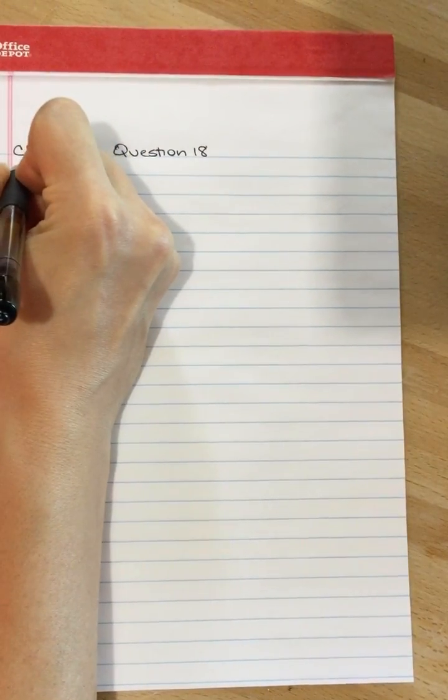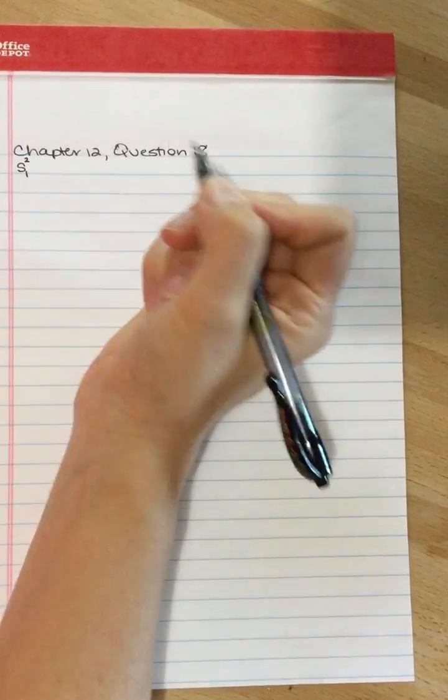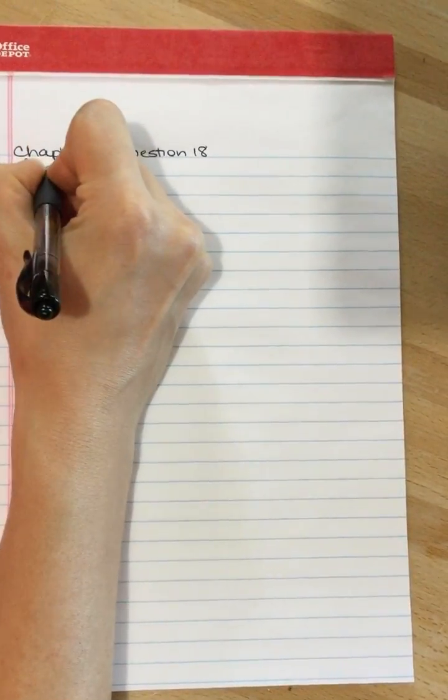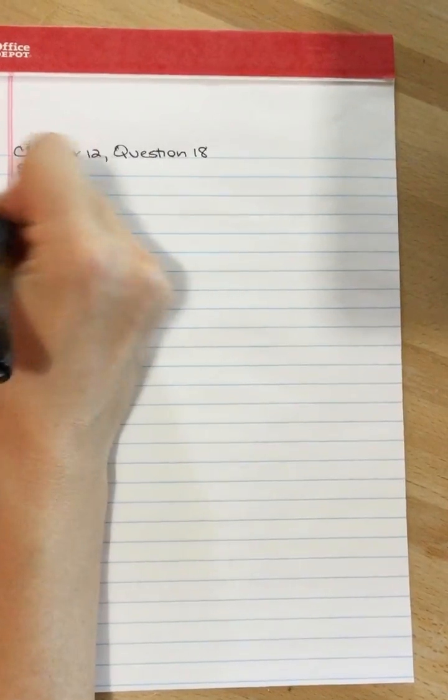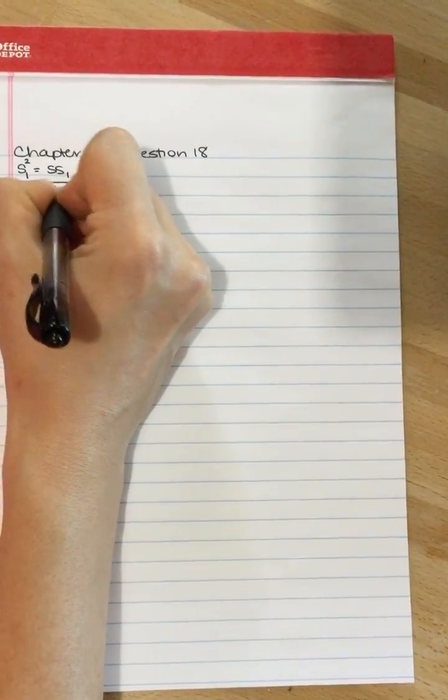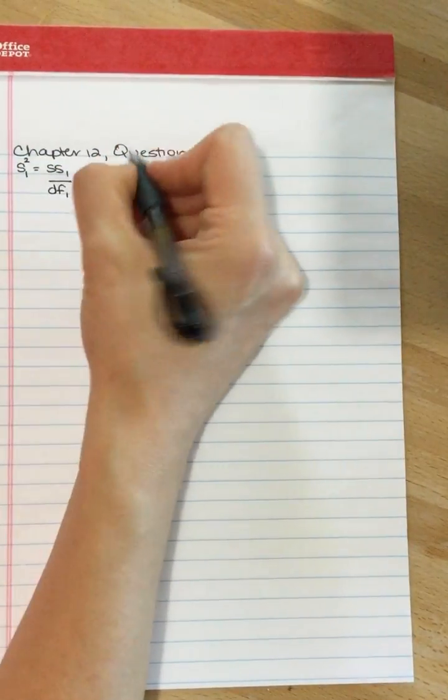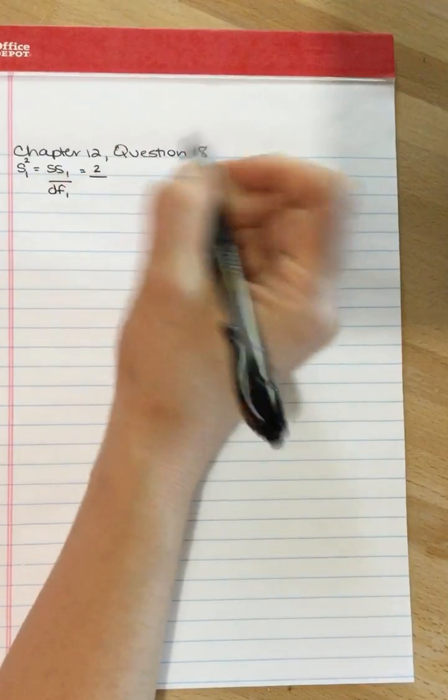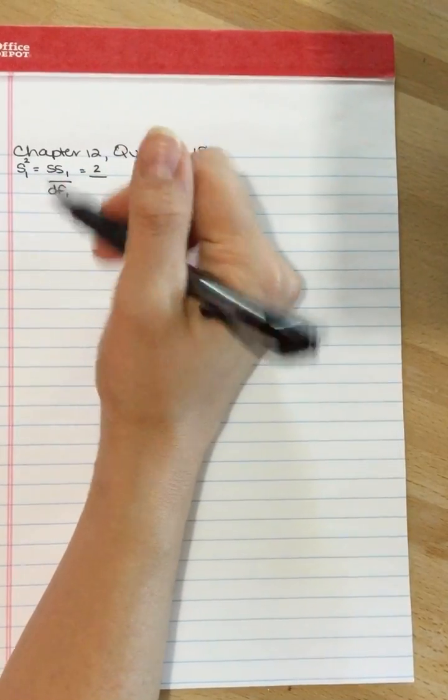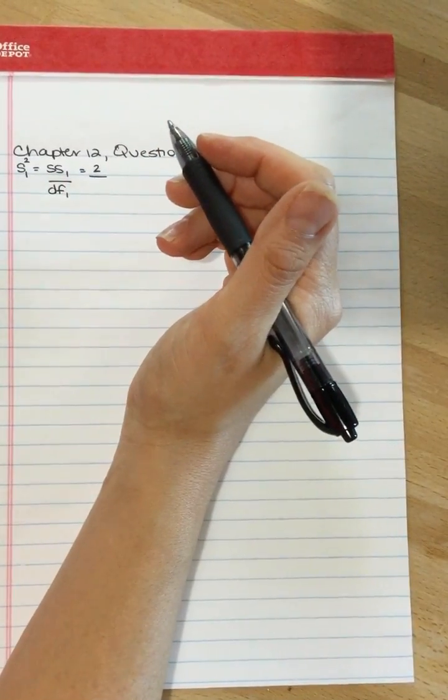So for treatment 1, variance is equal to the sum of squares of treatment 1 divided by the degrees of freedom of treatment 1. The sum of squares was 2, and the degrees of freedom is N minus 1, lowercase n.